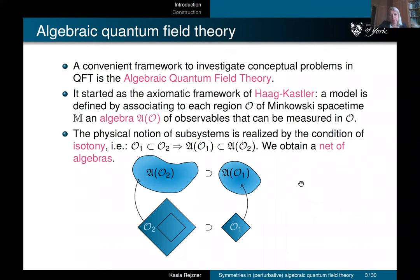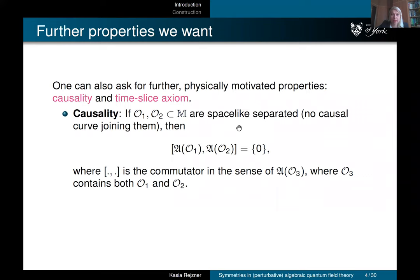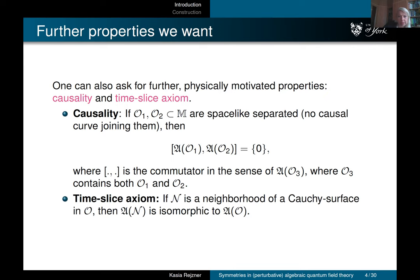This gives rise to the structure of a net. There are further physically motivated axioms: causality, saying observables in spacelike-separated regions should commute, and the time slice axiom, saying something about dynamics — if you start with a neighborhood of a Cauchy surface, the algebra there should be isomorphic to the algebra of the full region. This has been generalized to curved spacetime and to the perturbative setting where algebras are no longer C*-algebras.